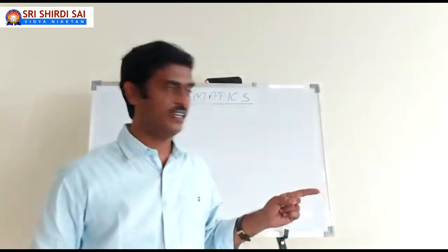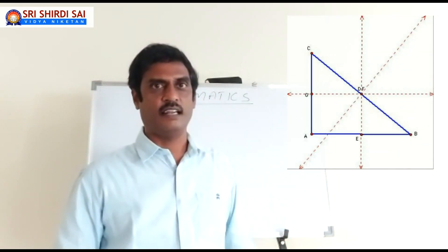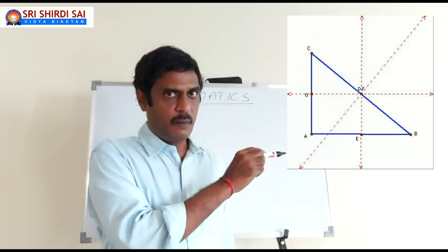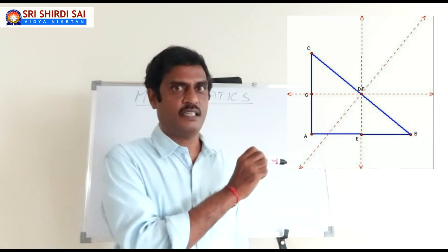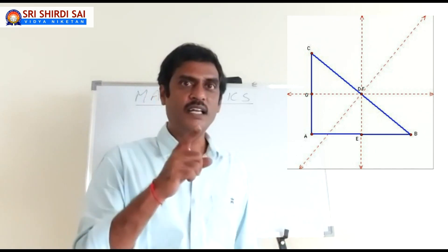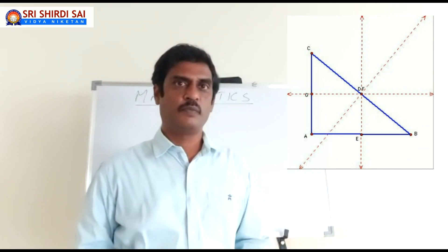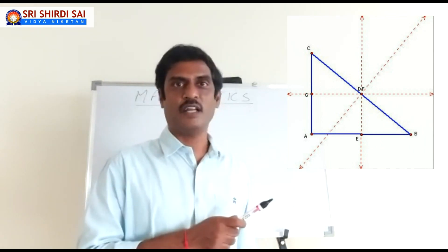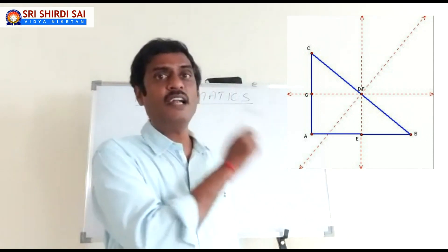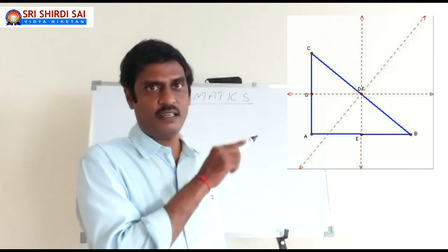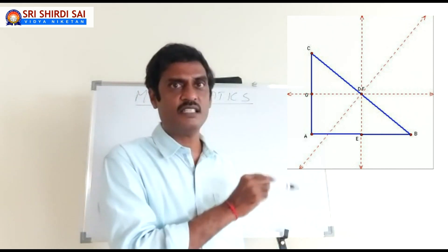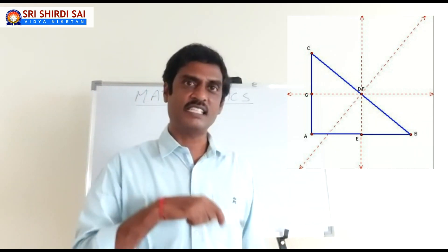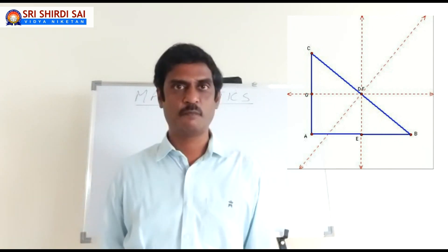Now let's go to a different type of triangle — the right angle triangle. Look at this right angle triangle. The right angle is at A, and 3 perpendicular bisectors are drawn. All 3 perpendicular bisectors meet at one point, but the point is located on one side — that is, the hypotenuse. So for a right angle triangle, the circumcenter lies on the hypotenuse. The most important point is that D is also the midpoint of that hypotenuse BC. So, for a right angle triangle, the circumcenter lies on the midpoint of the hypotenuse.